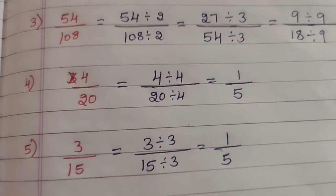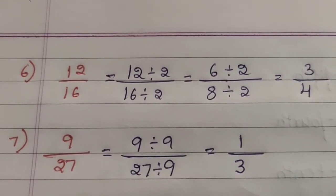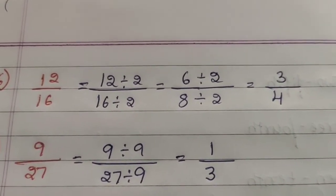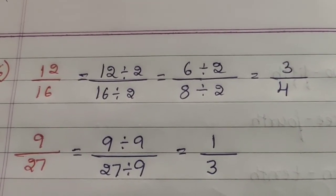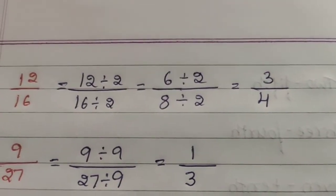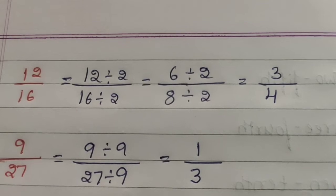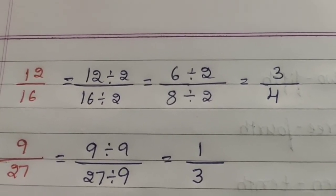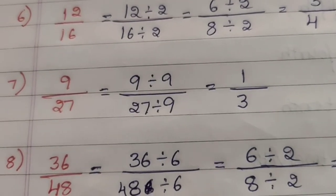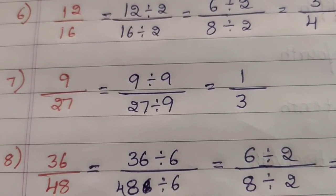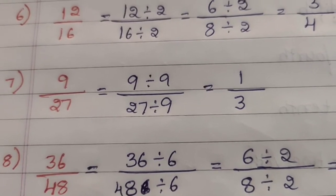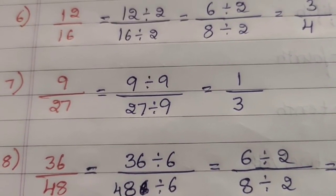Question 6 — 12/16: divide by 2: (12÷2)/(16÷2) — 2 sixes are 12, 2 eights are 16 — giving 6/8. Then divide by 2 again: (6÷2)/(8÷2) — 2 threes are 6, 2 fours are 8 — giving 3/4. Question 7 — 9/27: divide by 9: (9÷9)/(27÷9) — 9 ones are 9, 9 threes are 27 — giving 1/3.